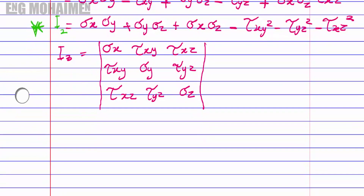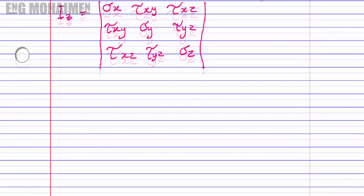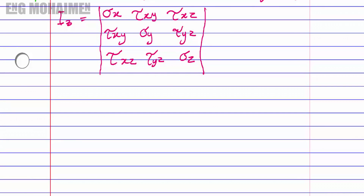The next step is to simplify this matrix into equation form to find the final equation for the third invariant. For the multiplication of a 3×3 matrix, in case you don't know how to do it: we take the first element, skip its row and column, get the 2×2 sub-matrix, do its multiplication, and then continue to the second and third elements.